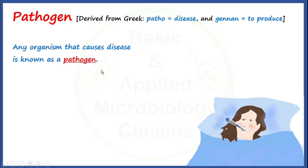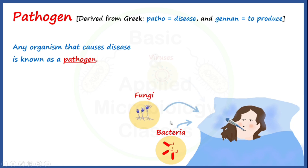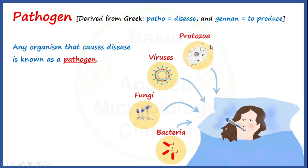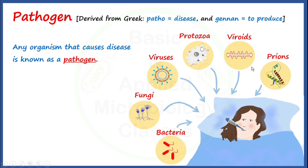Let's have a look at different types of examples of pathogen, which chiefly include bacteria, fungi, viruses, protozoa, viroids, and prions. These are some of the well-known microbial pathogens, which are known to cause various types of diseases in different types of hosts.